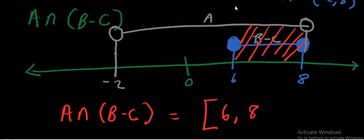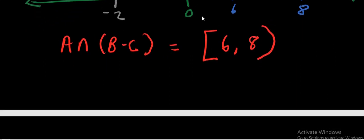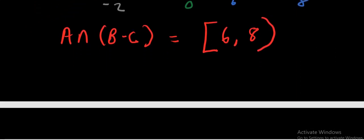Is 8 in set A? No, it is not — 8 has an open bracket in A. Is 8 in set B minus C? Yes, it is. So 6 has a closed bracket and 8 has an open bracket. Therefore A intersection (B minus C) equals block bracket 6 comma 8, open bracket.